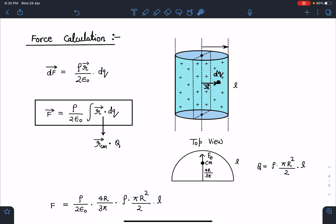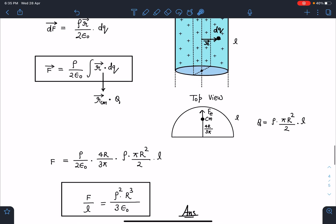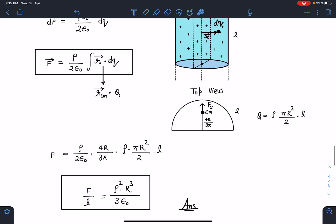This half, I can write r_cm will be replaced by 4r by 3π and this charge q will be charge on the half of the cylinder. I am taking length L here. So this charge q will become ρ into πr² L by 2. When I substitute these values, I get ρ by 2ε₀, r_cm is 4r by 3π, charge q is ρπr²L by 2. F by L ratio we are going to get ρ²r³ by 3ε₀. This is the final answer.